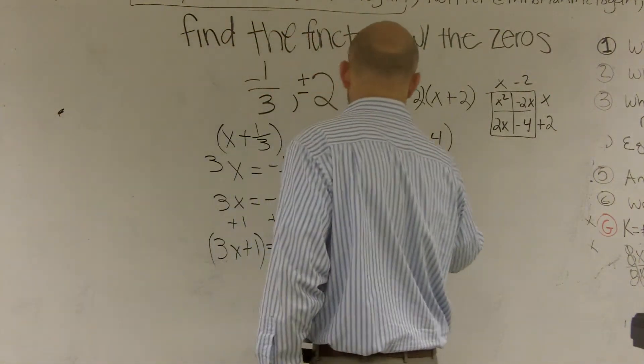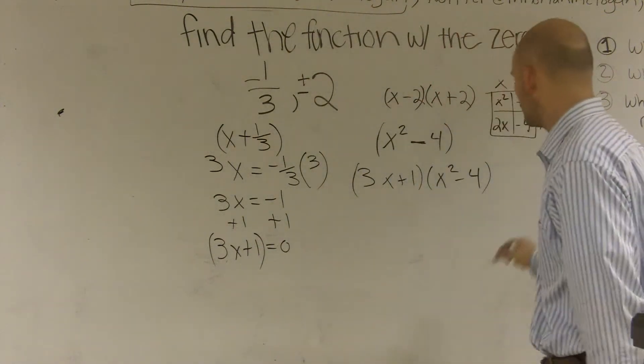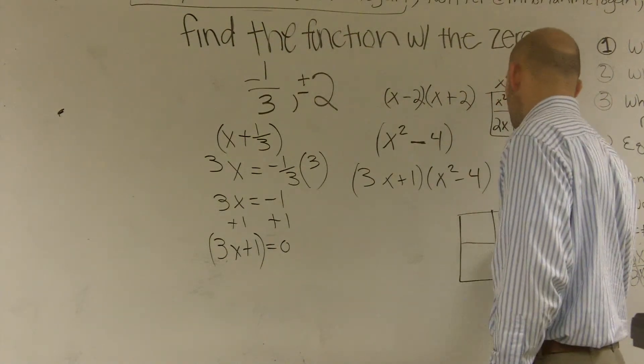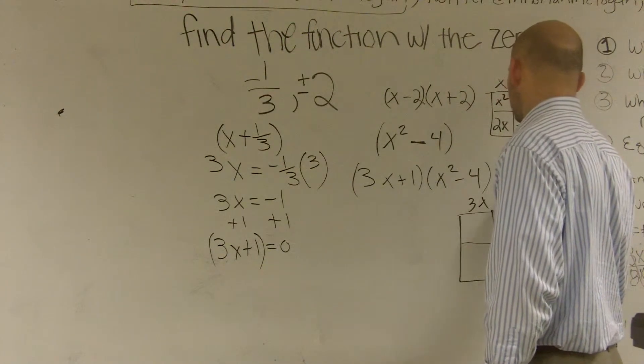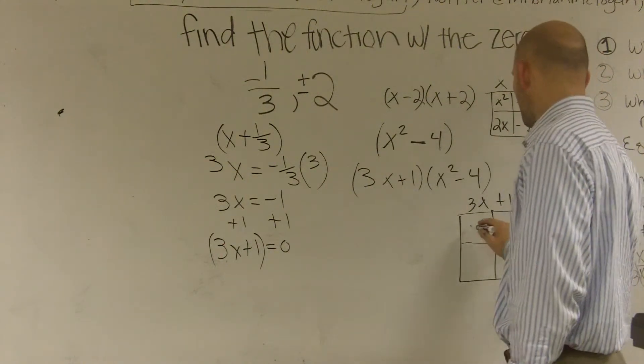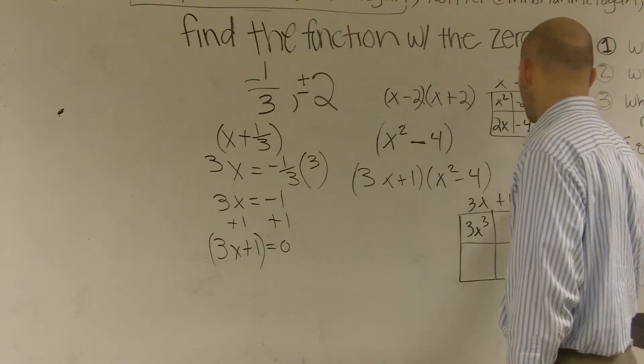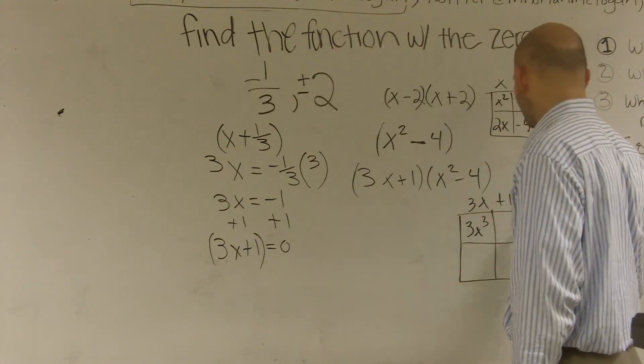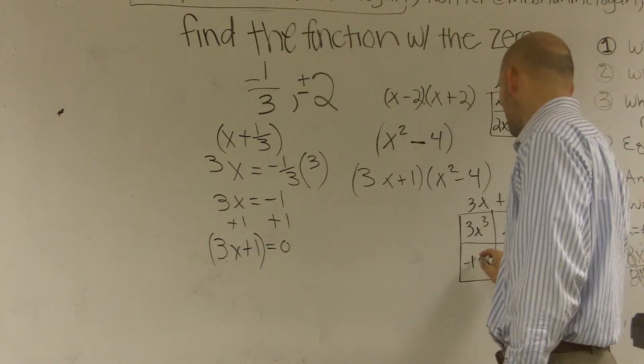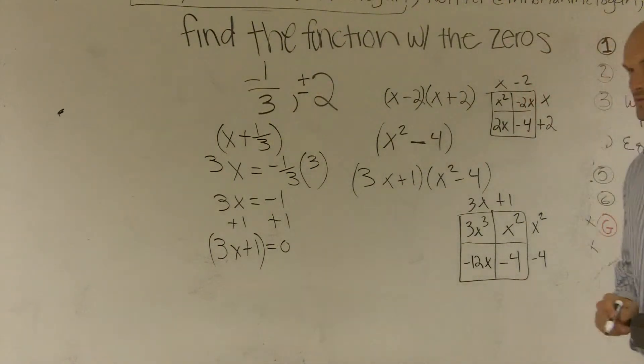So 3x plus one times x squared minus four. And then let's just do another box, because it's just easy to organize. So 3x plus one, x squared minus four. 3x times x squared is 3x cubed. 1 times x squared is 1x squared. 3x times negative four is negative 12x. And 1 times negative four is negative four. Make sense?